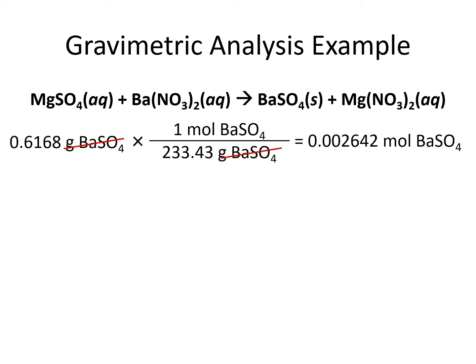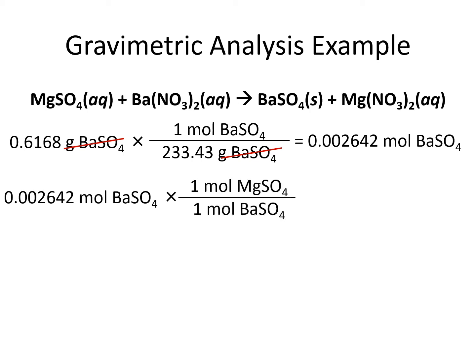We can go from moles of barium sulfate to moles of magnesium sulfate, since ultimately what we want is the amount of magnesium sulfate in our mixture. We take our 0.002642 moles times 1 divided by 1, because we've got coefficients of 1 in our balanced chemical equation — but if our equation were different, we could have different numbers here. Our number ends up staying the same, because the units are now moles of magnesium sulfate.